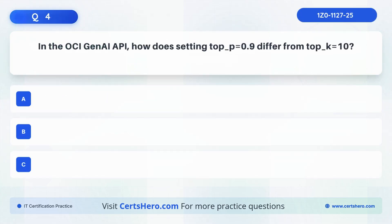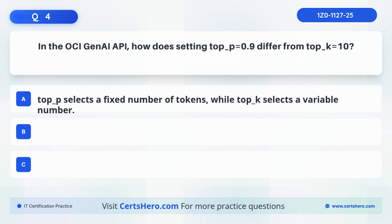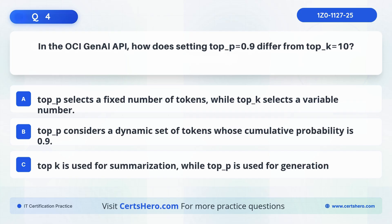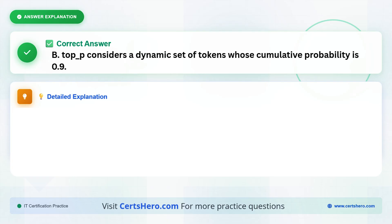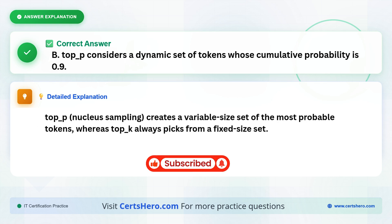Question 4. In the OCI Gen AI API, how does setting TOP P equal to 0.9 differ from TOP K equal to 10? Is it because TOP P selects a fixed number of tokens, while TOP K selects a variable number? TOP P considers a dynamic set of tokens whose cumulative probability is 0.9? Or TOP K is used for summarization, while TOP P is used for generation? The correct answer is B. TOP P considers a dynamic set of tokens whose cumulative probability is 0.9. This method, known as nucleus sampling, creates a variable size set of the most probable tokens, whereas TOP K always picks from a fixed size set.